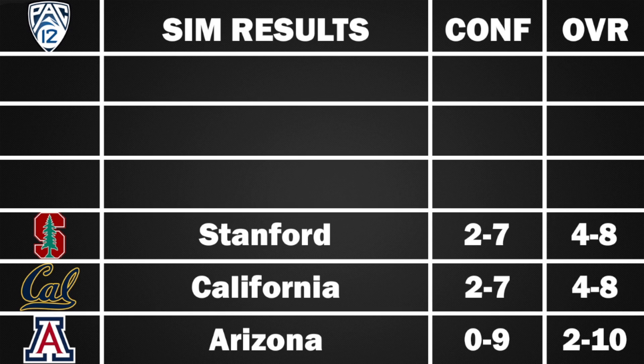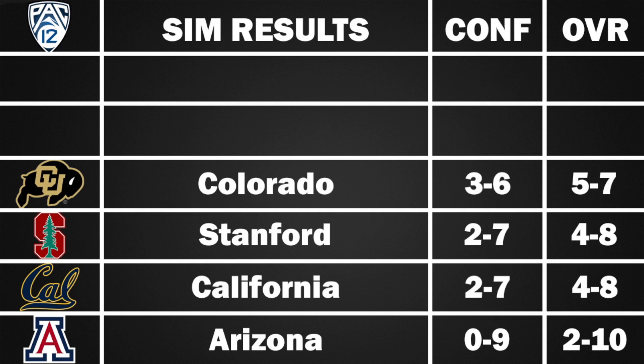Ahead of Stanford is Colorado, just missing out on a bowl game at 5-7 overall, 3-6 in the Pac-12. They beat Nebraska — a big non-conference win — plus Colorado State, Stanford, Arizona, and an upset win over Utah. They lose to TCU, Oregon, USC, Arizona State, UCLA, Oregon State, and Washington State.